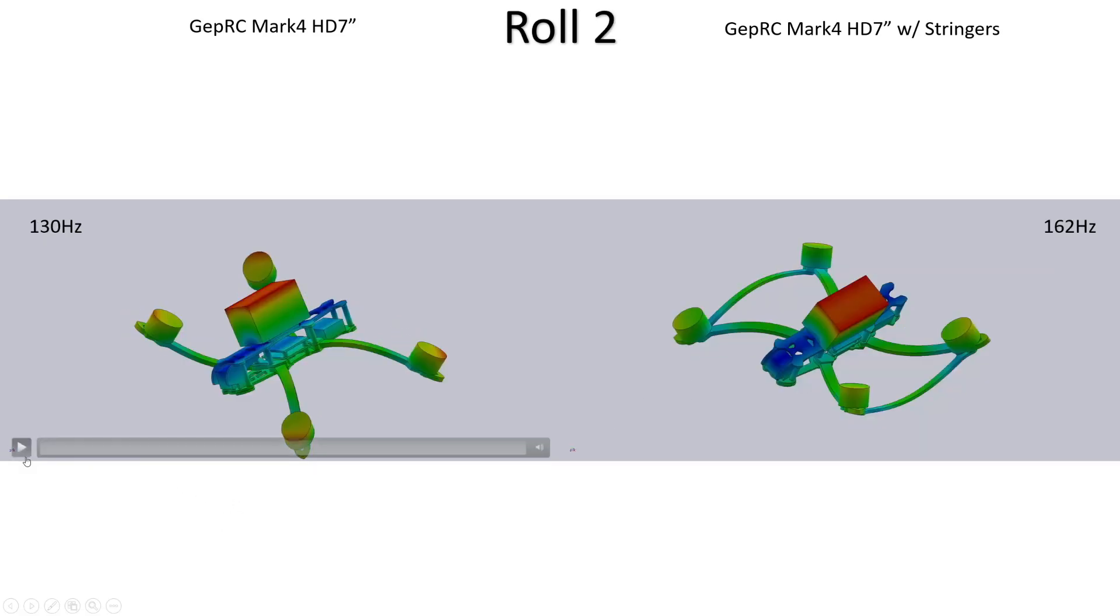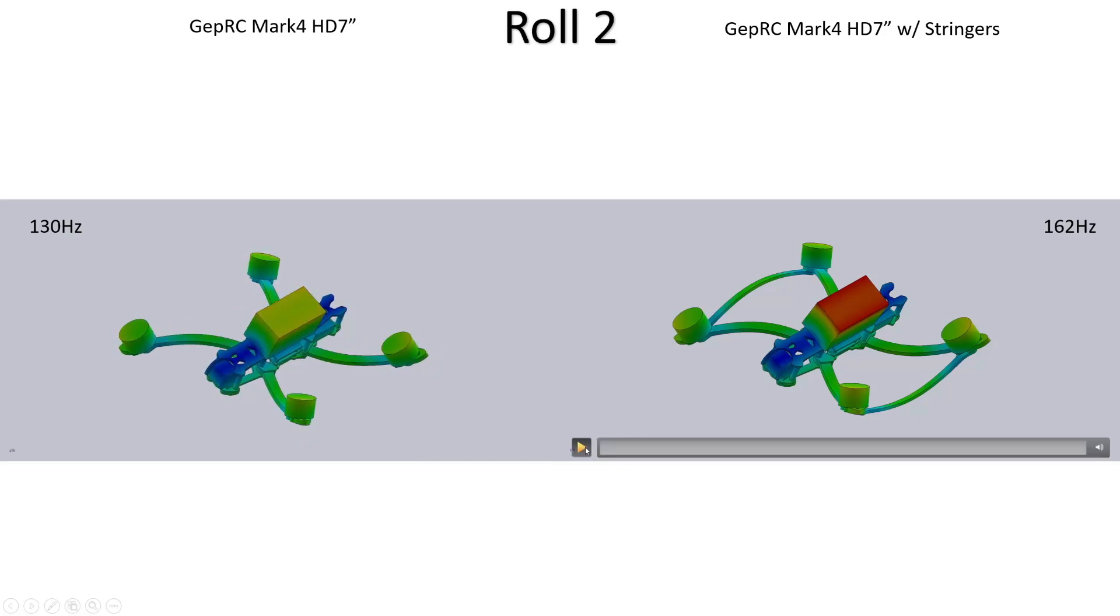If we look now at the second roll mode without the stringers as before, you can see there's a lot of movement of the quad left to right here which is why it's so pronounced on the roll axis.